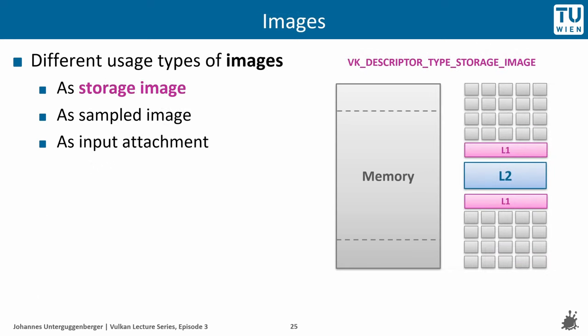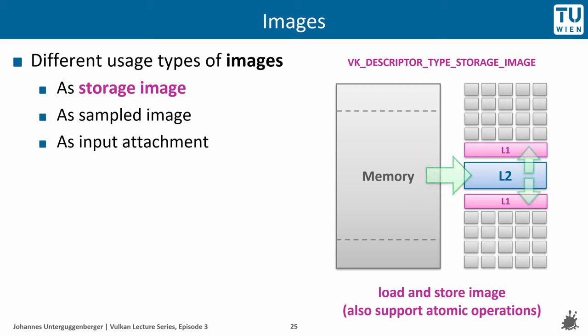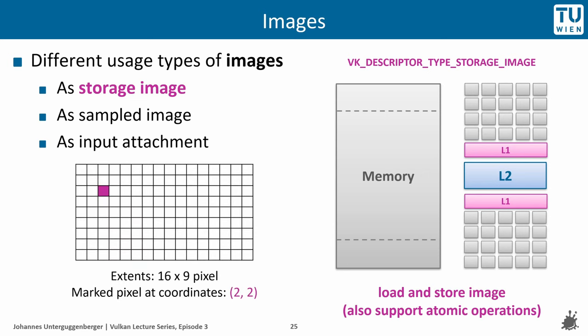Let us now move on to images and their different usage types. The first usage type is as a storage image, which supports load and store operations and with that also atomic operations — it is very similar to storage buffers. Data can be loaded by multiple core clusters and multiple core clusters can store to the image. Here on the slide we have an example image with extents 16x9 pixels, and the storage image is accessed through its pixel coordinates, so the marked pixel can be accessed through integer xy coordinates 2 and 2.